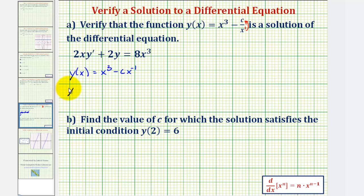And therefore y prime, or dy/dx, is equal to 3x². Here we'll multiply it by negative one, and then subtract one from the exponent. So we'll have plus c times x to the power of negative two.